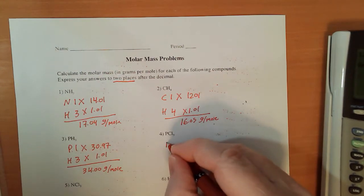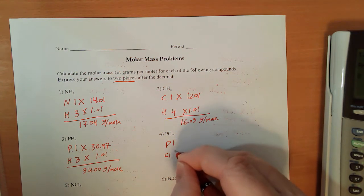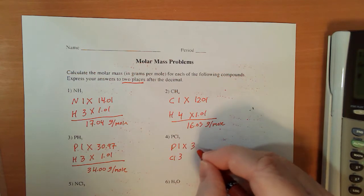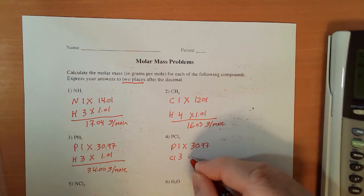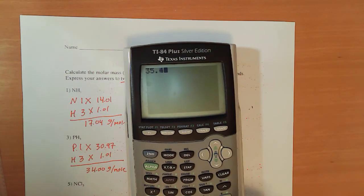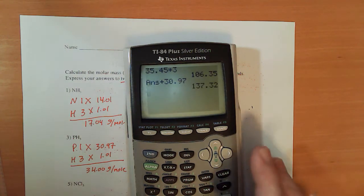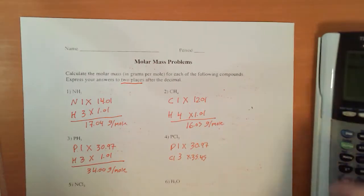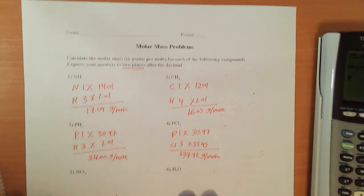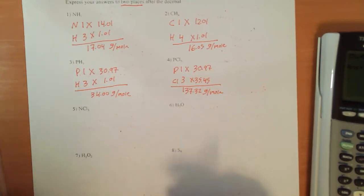For PCL5, phosphorus and chlorine, 1 phosphorus and 3 chlorines. The phosphorus is 30.97 and the chlorine is 35.45, so 35.45 times 3, plus 30.97 and I'm getting 137.32.